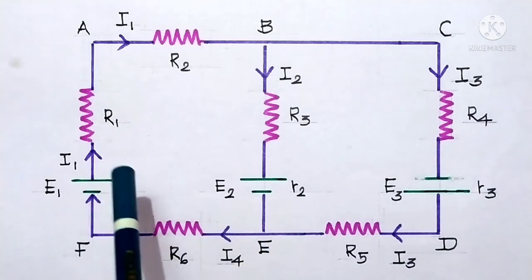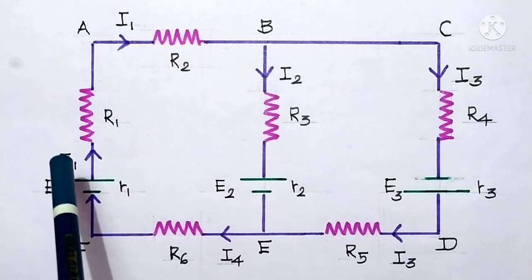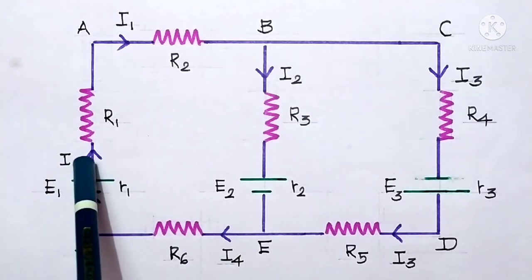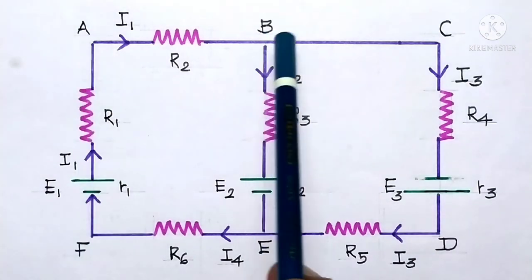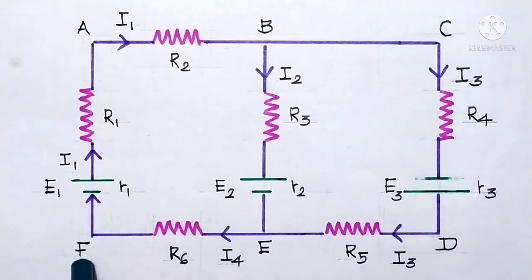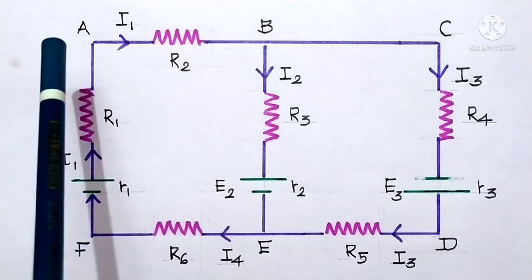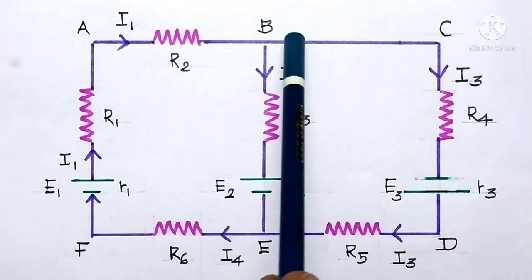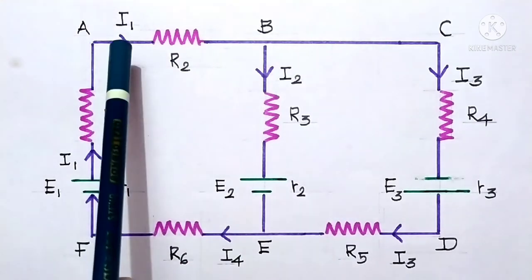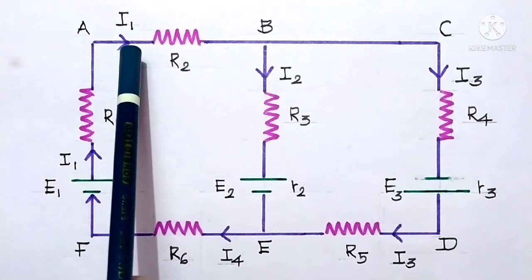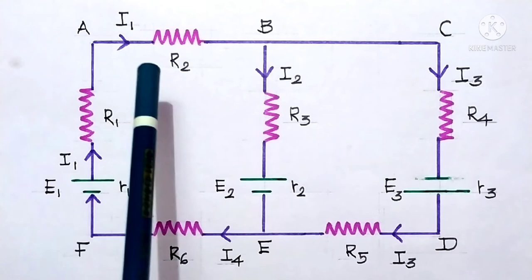What does the rule say? First, we need to multiply the currents and their respective resistances. Let us take the loop or path A, D, C, D, E, F, and A. According to convention, if our direction is from left to right — in other words, the clockwise direction — and if the current flows in the same direction, then the current direction is taken as positive. If it flows in the opposite direction, then it is taken as negative.